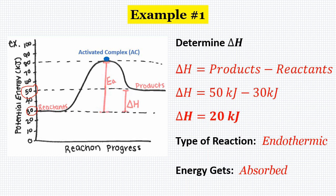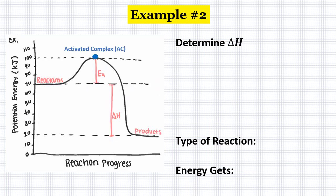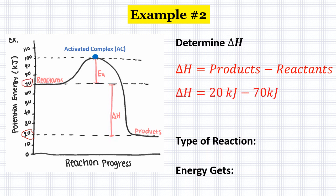Let's look at another example. Again, let's find the change in enthalpy, identify the type of reaction, and determine what's happening with the energy. Delta H is found by subtracting the energy of the products from the energy of the reactants. The products are sitting at 20 kilojoules and the reactants are at 70, so 20 minus 70 gives us a change in enthalpy of negative 50 kilojoules. Because delta H is negative, this is an exothermic reaction and energy is being released.